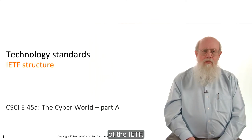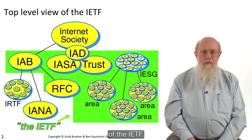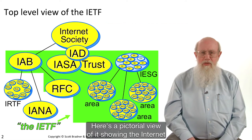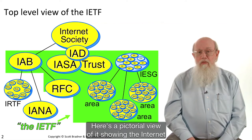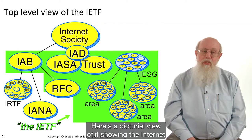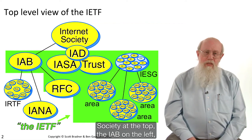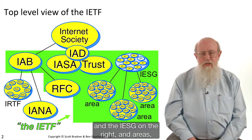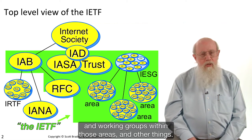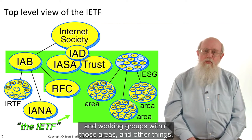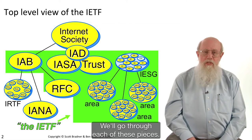Now let's talk about the structure of the IETF. Here's a pictorial view of it, showing the Internet Society at the top, the IAB on the left and the IESG on the right, and areas and working groups within those areas and other things. We'll go through each of these pieces.